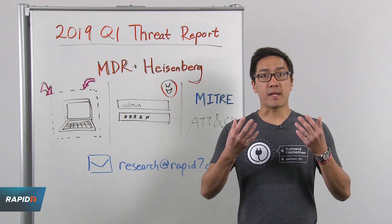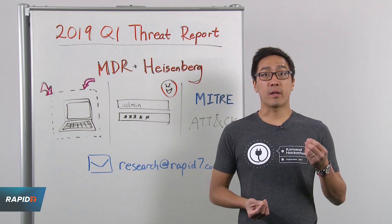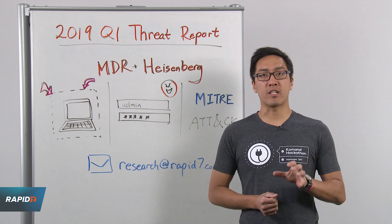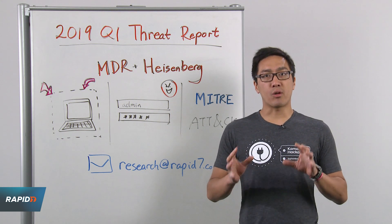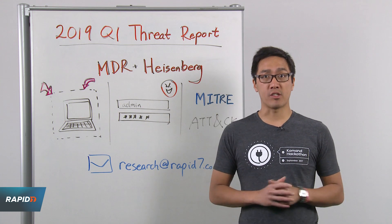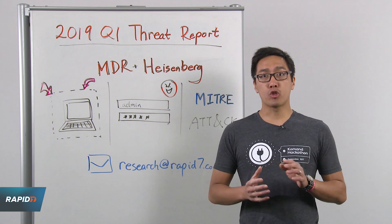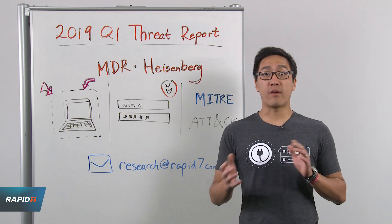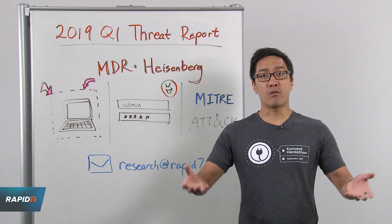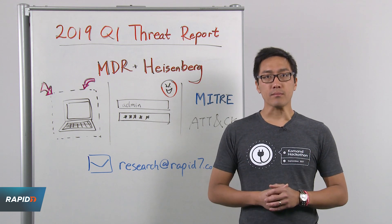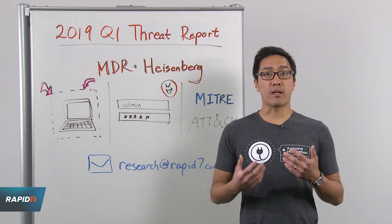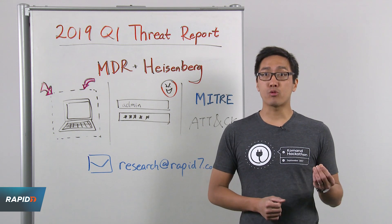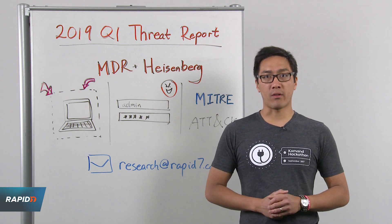Our analysis is based on data we've collected from engagements run by our Managed Detection and Response Team, or MDR, which provides security services to a broad range of organizations, and our Heisenberg system, a globally distributed honeypot cloud network with nodes across various service providers that monitor for inbound activity. The broad scale and variety of data enables us to perform varied analysis and to draw data-driven conclusions about the threat landscape.